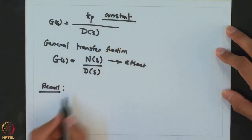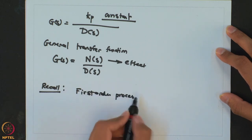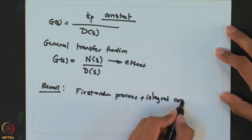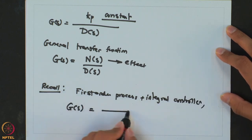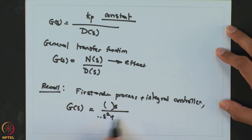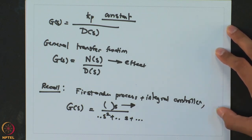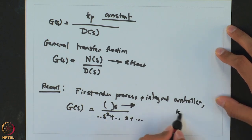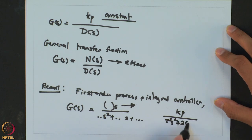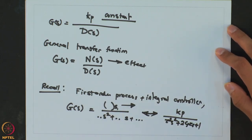One example is when we get a second order system by having an integral controller on a first order process. In that case the transfer function had S in the numerator and a second order polynomial in the denominator. This S is going to have a specific effect on the response, making it different from a general Kp over (τ²s² + 2ζτs + 1). That is exactly what we will be studying — what happens when N(s) is a function of S.